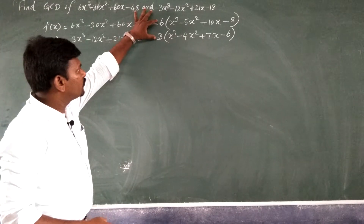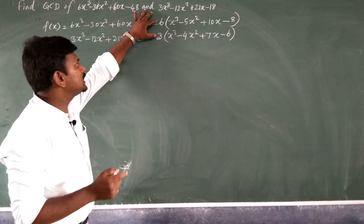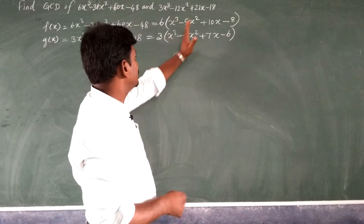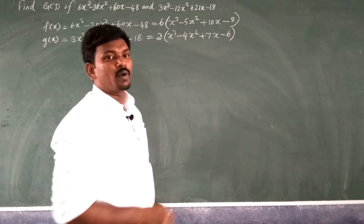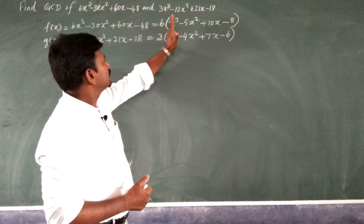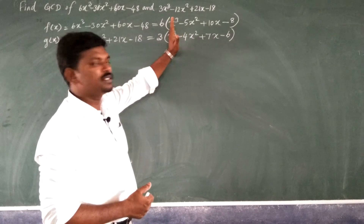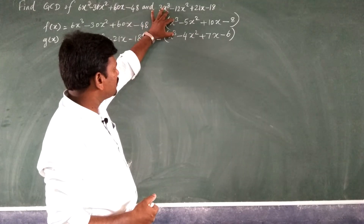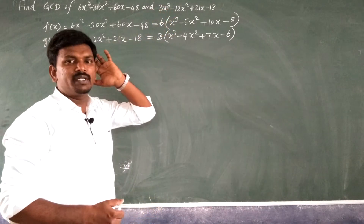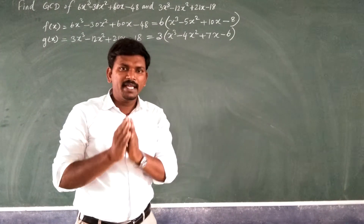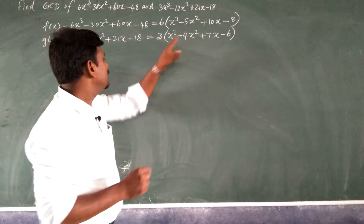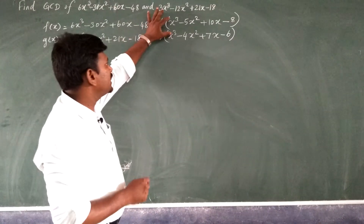We can find the GCD of 6 and 3 easily, but we also need to find the GCD of the two polynomials using the division method. When using division to find the GCD, first check the degree of the polynomials. The one with the greater degree should be the dividend, and the one with the smaller degree should be the divisor.